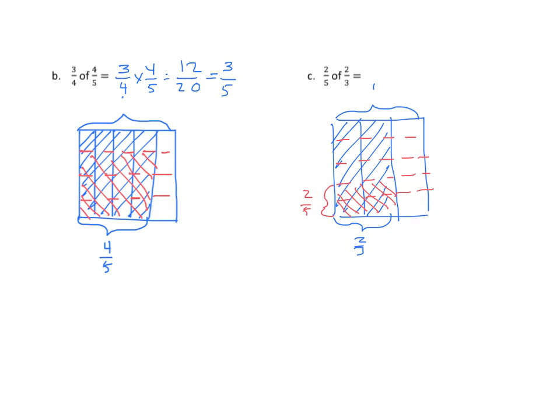Again, what do we have? We have two-fifths times two-thirds. We get four-fifteenths. And if we look at our model here, we have four shaded out of a total of 15. So four-fifteenths is my answer.